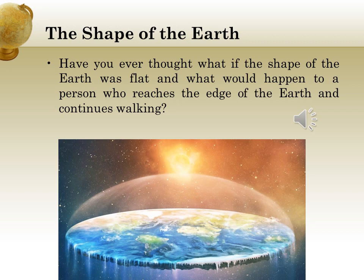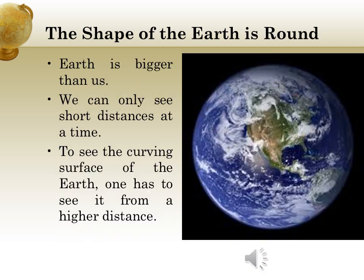Have you ever thought what if the shape of the earth was flat and what would happen to a person who reaches the edge of the earth and continues walking? Yes, he would surely fall off, but nobody has ever fallen off the earth in this way. What does this show? It shows that the shape of the earth is round, but when you look around, it appears to be flat. It is because the earth is so much bigger than us.